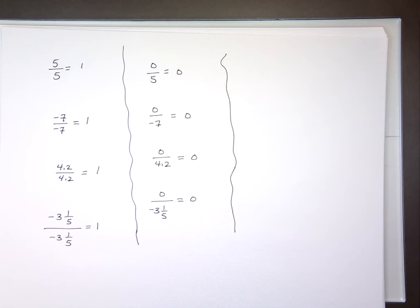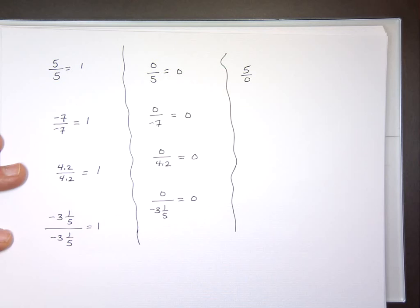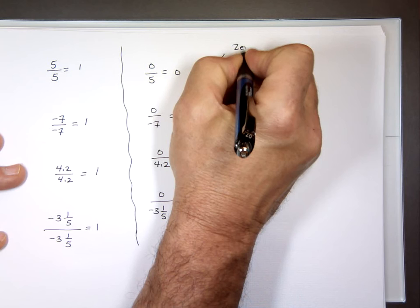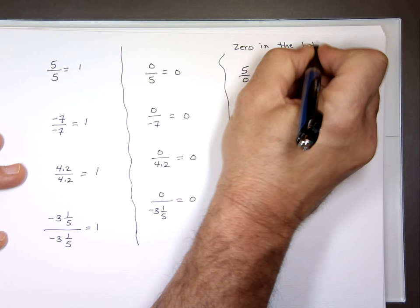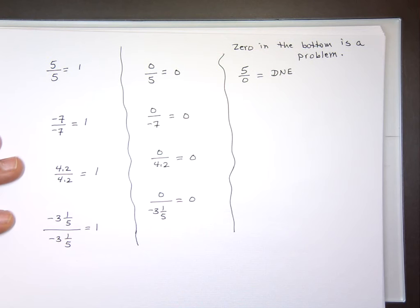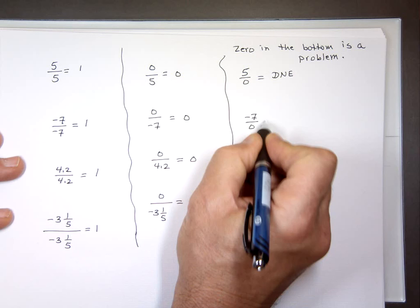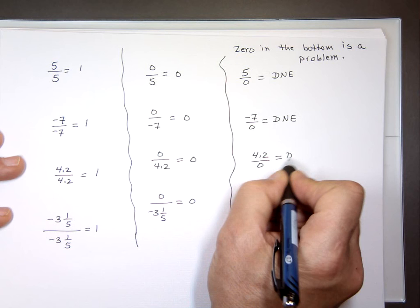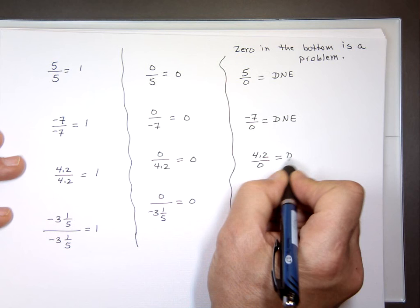What's 5 over 0? Error. Undefined. Does not exist — DNE. Zero on the bottom is always a problem — there is no answer. What's negative 7 over 0? Can't be done. What's 4.2 divided by 0? Can't be done. What's negative 3 and one-fifth divided by 0? Can't be done.